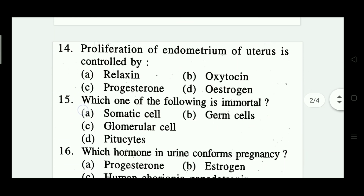Question number fourteen: proliferation of endometrium of uterus is controlled by what? Option A: relaxin, Option B: oxytocin, Option C: progesterone, Option D: oestrogen. Which one is correct? Option D — oestrogen is correct.